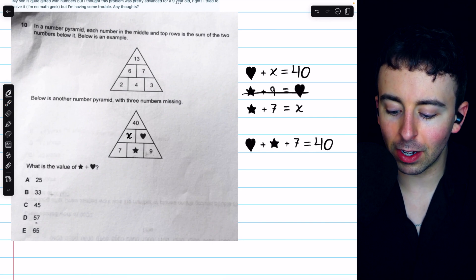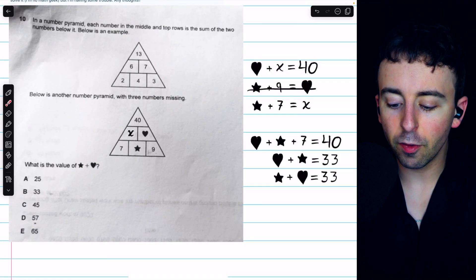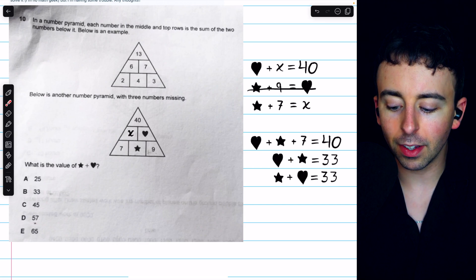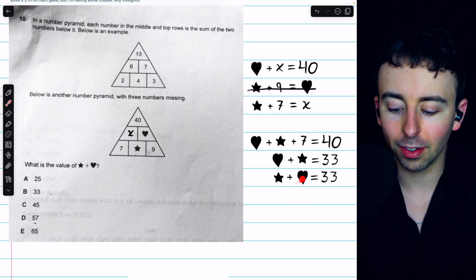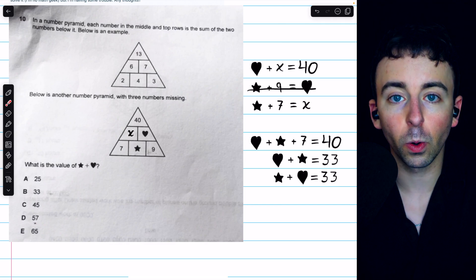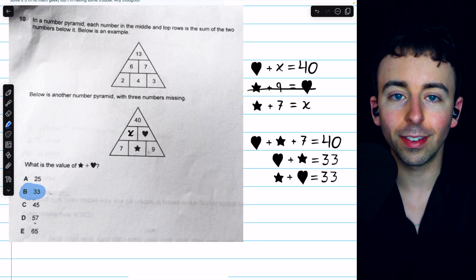Now we can solve for that by just subtracting 7 from both sides. Minus 7, minus 7, we've got our answer. Subtracting 7 from both sides tells us that heart plus star equals 33, which of course also means that star plus heart is 33, because the order of addition does not matter. So the correct answer is answer choice B.